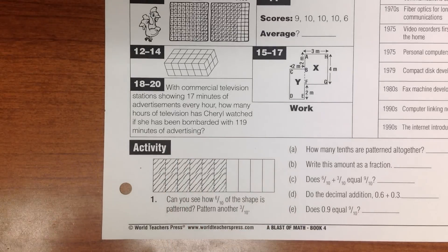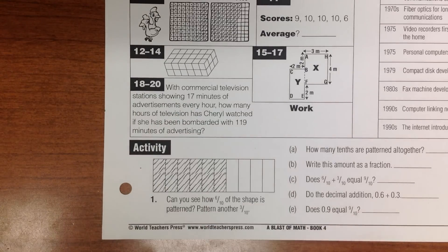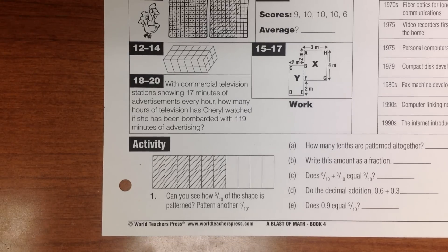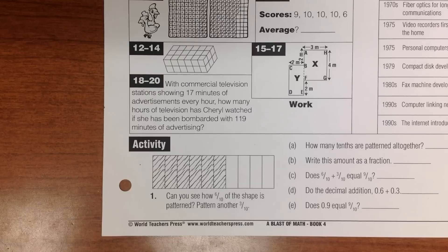Questions 18 through 20. The question says, With commercial television stations showing 17 minutes of advertisements every hour, how many hours of television has Cheryl watched if she has been bombarded with 119 minutes of advertising? What is the problem asking us to find? Question 18. What is the problem asking us to find?